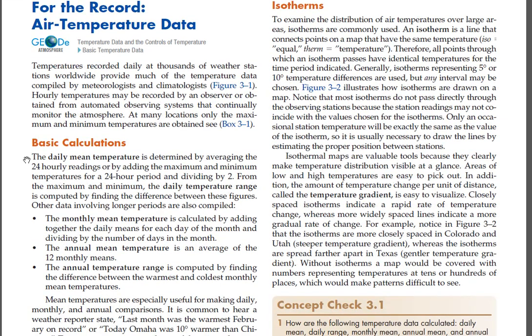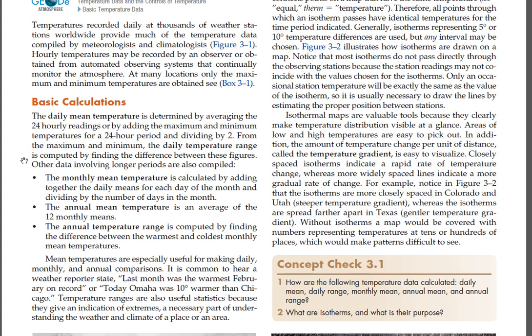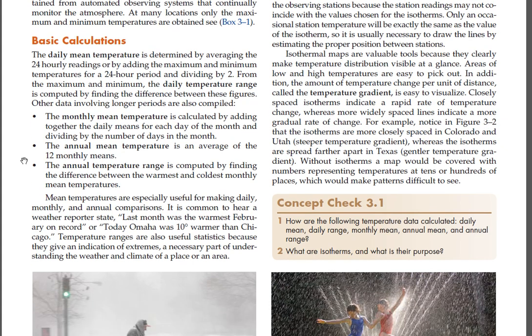Basic calculations. The daily mean temperature is determined by averaging the 24-hourly readings or by adding the maximum and minimum temperatures for a 24-hour period and dividing by 2. From the maximum and minimum, the daily temperature range is computed by finding the difference between these figures. The monthly mean temperature is calculated by adding together the daily means for each day of the month and dividing by the number of days in the month. The annual mean temperature is an average of the 12 monthly means.